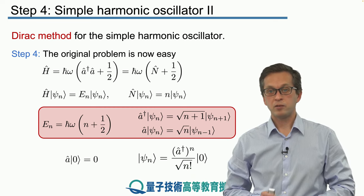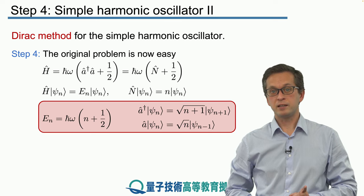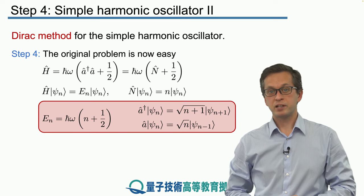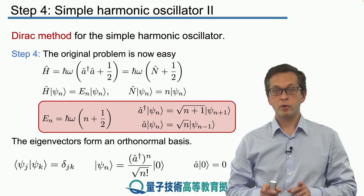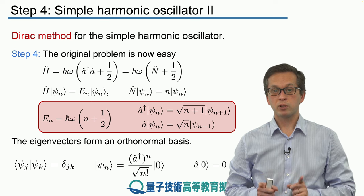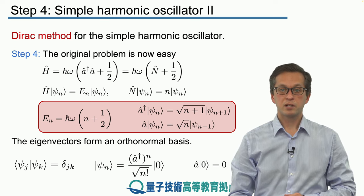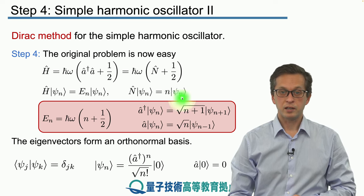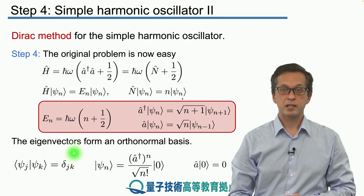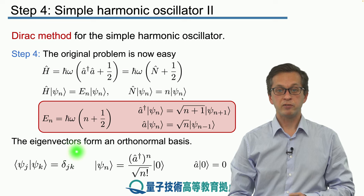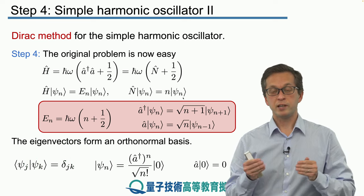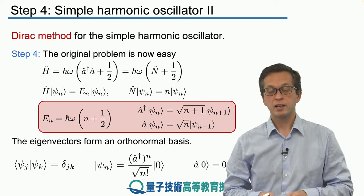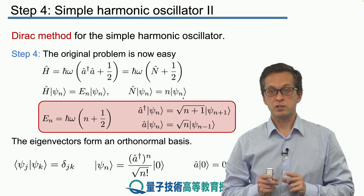One last important property is that these eigenvectors psi n form an orthonormal basis. The eigenvectors corresponding to different energies are orthogonal — when we take their inner product, it equals zero.